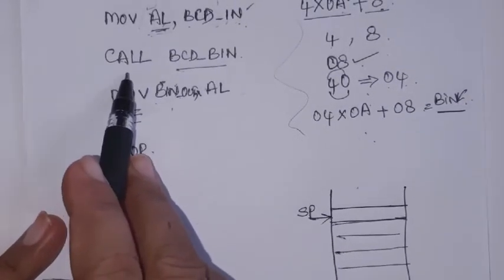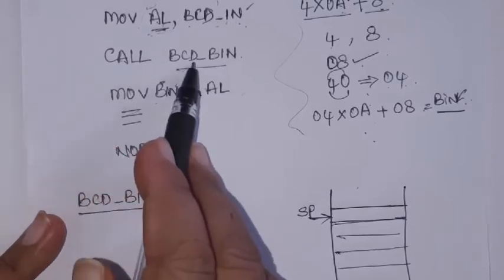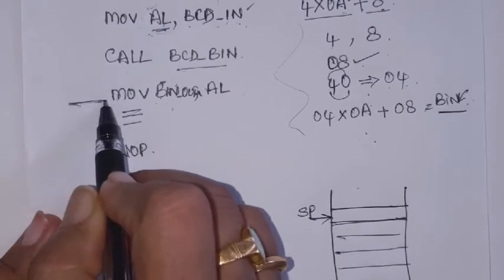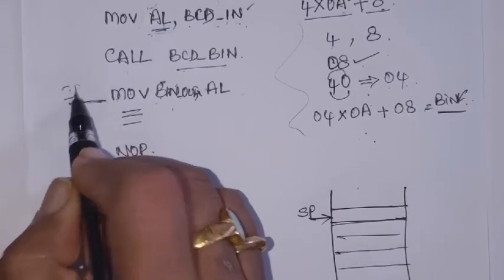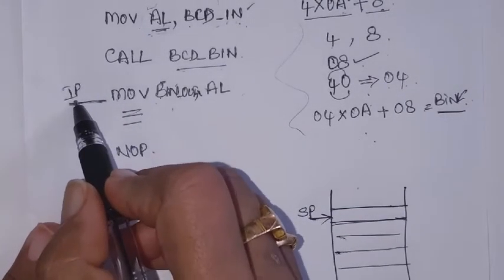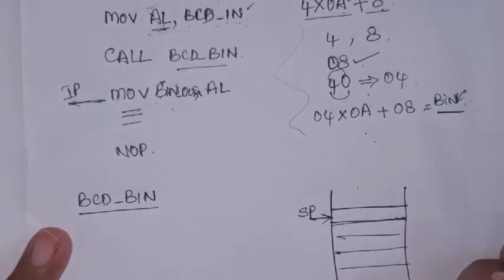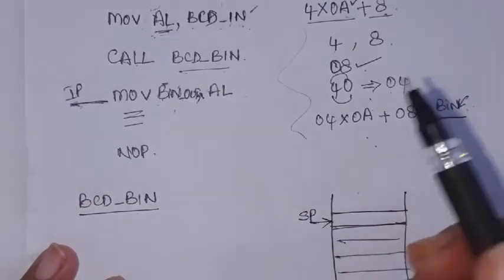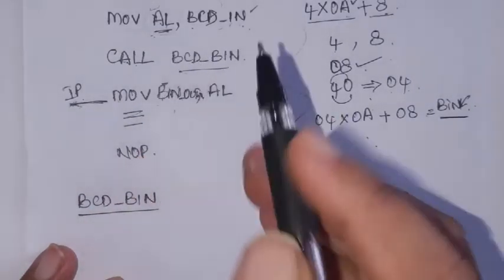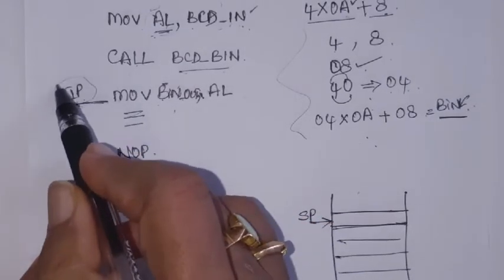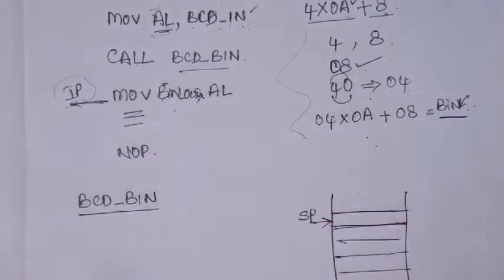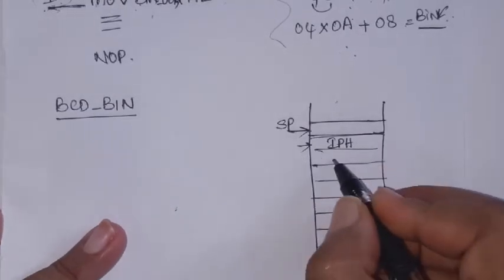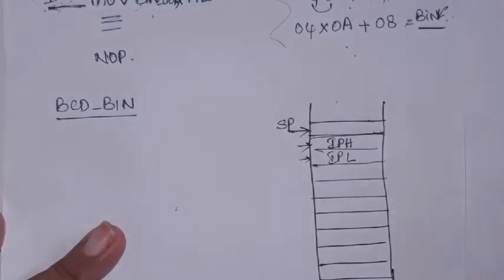With the execution of the CALL instruction, the stack is already used. When CALL BCD2BINARY executes, the next instruction address — which is in the instruction pointer — is saved in the stack. The instruction pointer high byte is stored in one stack location and the instruction pointer low byte in the next, and the stack pointer moves to point to that location.